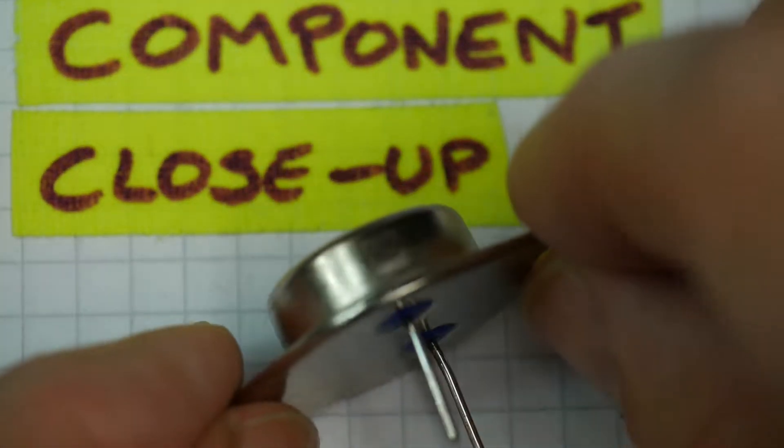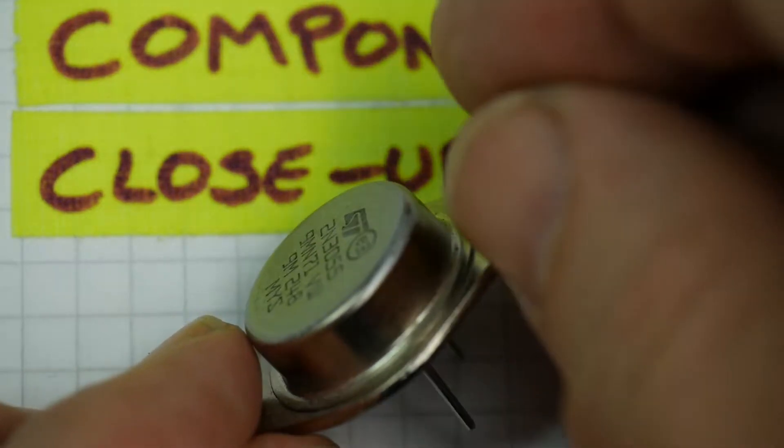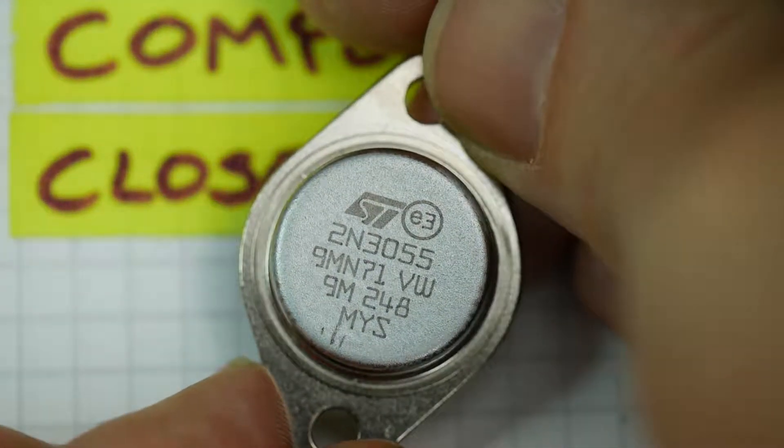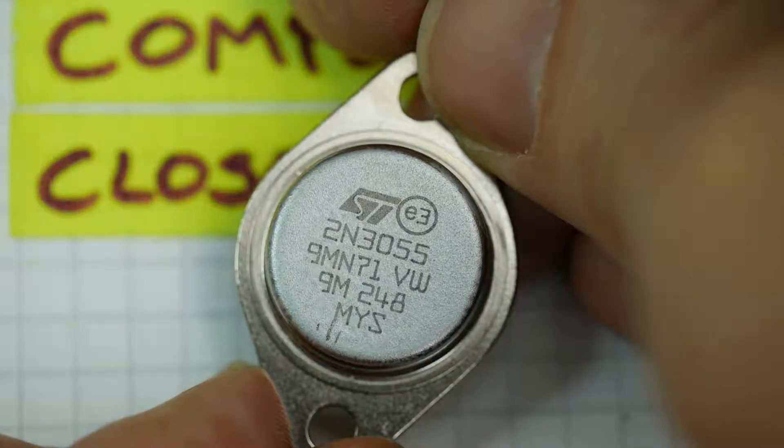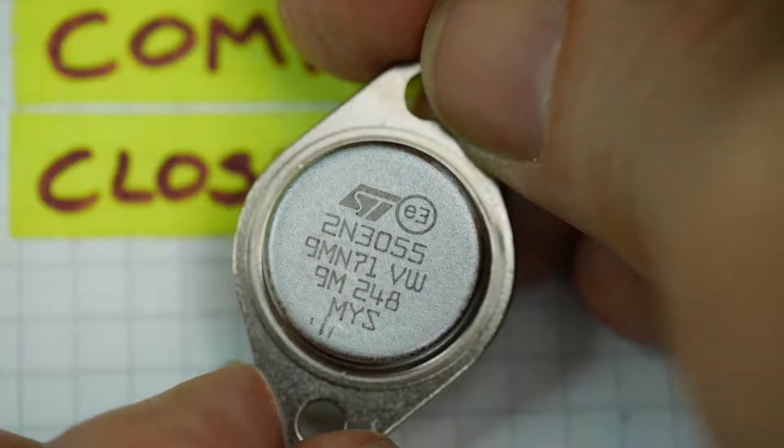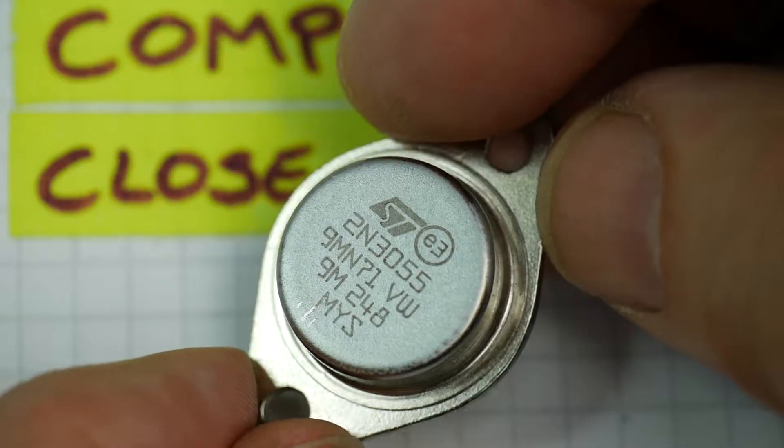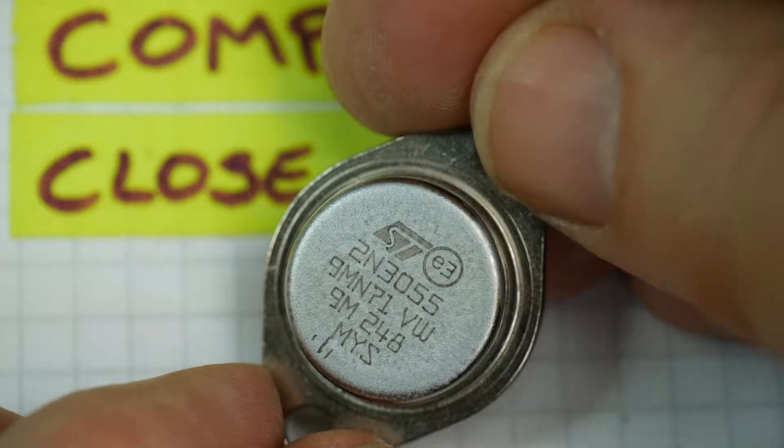This is a TO3 power transistor, not a popular package anymore. This is a very popular component, the 2N3055 power transistor. This is quite a modern one. They're still being made. It dates back to the 1960s in its earliest form. This one is made by ST.